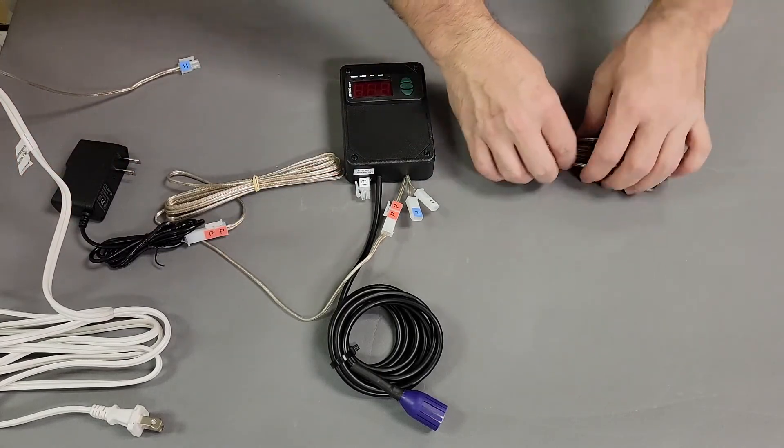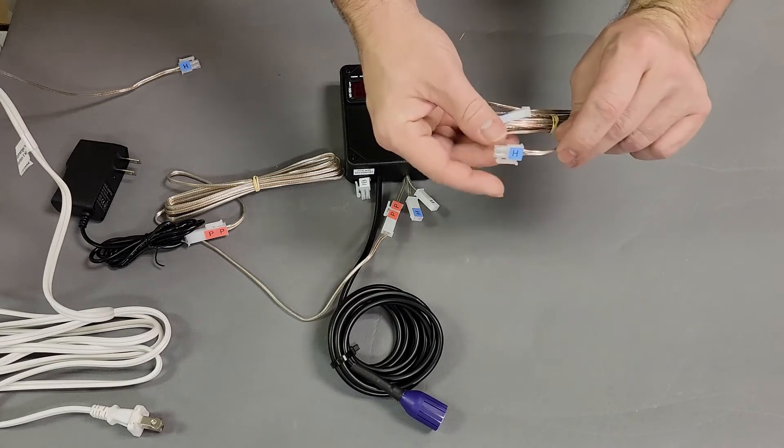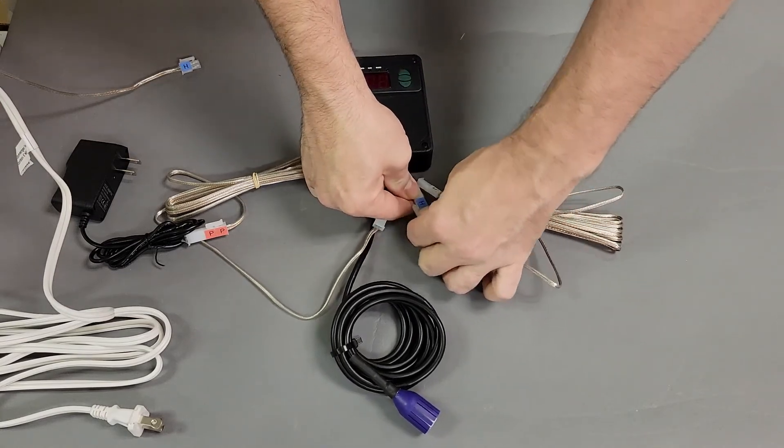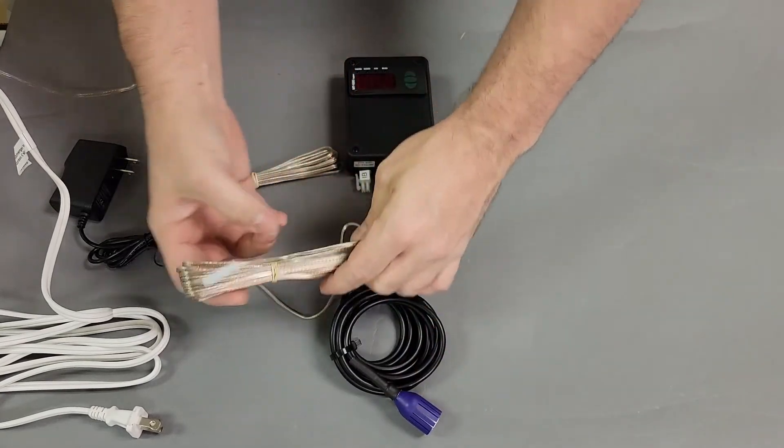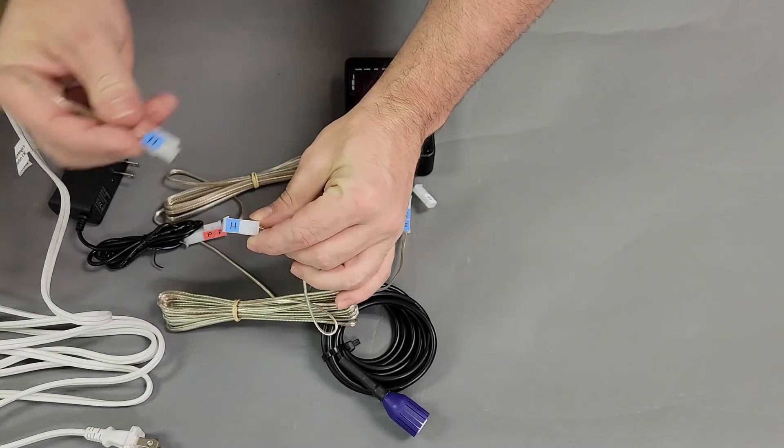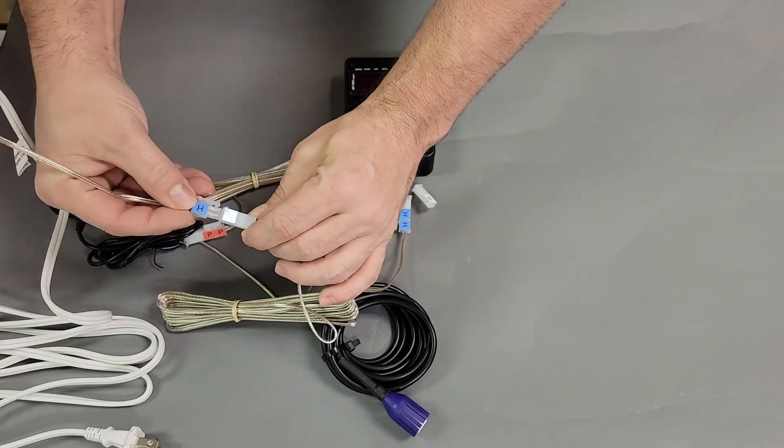Now using the 15 foot humidification signal cable, once again blue H to blue H, we will run the cable over to the humidifier and connect one last time. And this has the wiring of this system complete.